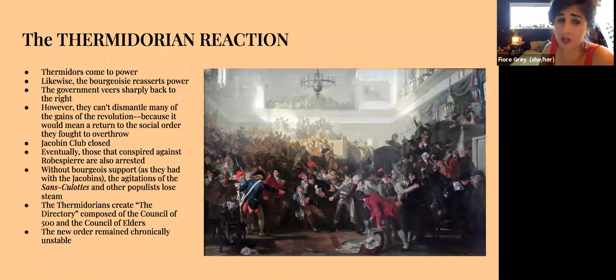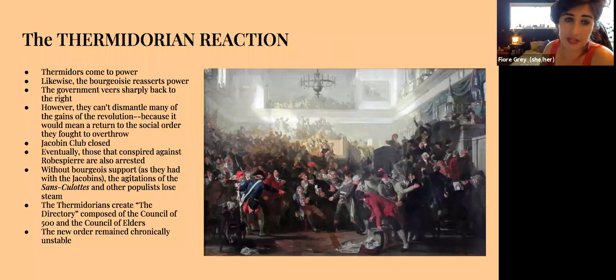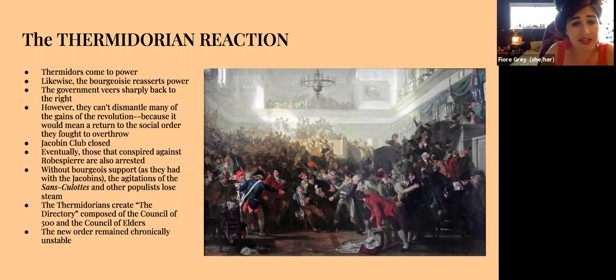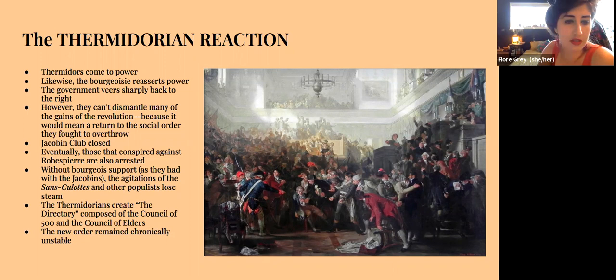Then came the Thermidorian Reaction. All this happened during the month of Thermidor in the revolutionary calendar — a strange calendar the revolutionaries devised to restructure everyone's concept of time. The new leaders reasserted bourgeois power, and the government veered sharply right, but couldn't dismantle the gains of the revolution as that would mean returning to the social order they had also fought to overthrow. The Jacobin Club was closed. All those who had conspired against Robespierre were eventually also arrested. Without bourgeois support, the agitations of the sans-culottes and other populists began to lose steam. The Thermidorians created the Directory — composed of two councils, the Council of 500 and the Council of Elders — a consolidation of bourgeois power structured to make it difficult for people to be elected. The new order remained chronically unstable.